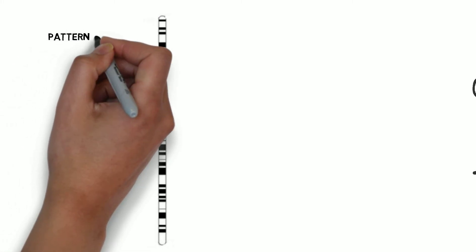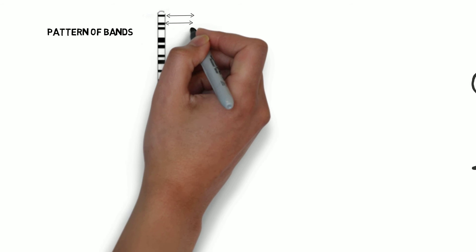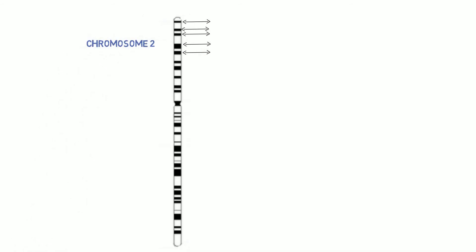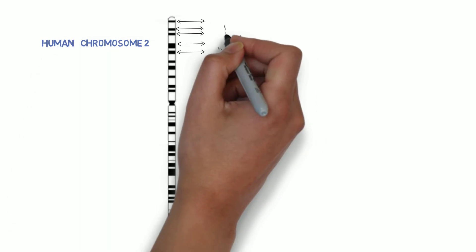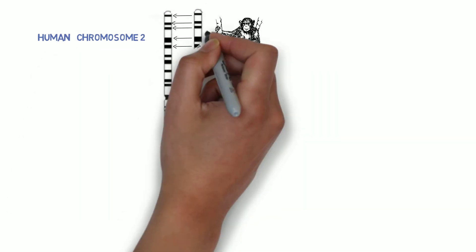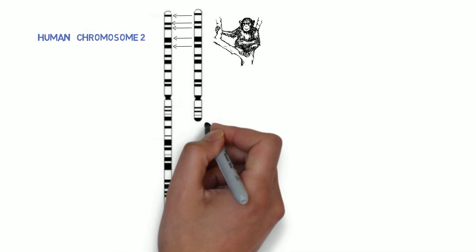When you look under a microscope at a chromosome, you see a pattern of bands. The pattern is a property of the array of genes along it. So this is chromosome two, the banding pattern of chromosome two. Chimpanzees, gorillas, and orangutans have almost the exact same genes as we do, which means that the same chromosome banding pattern is present.